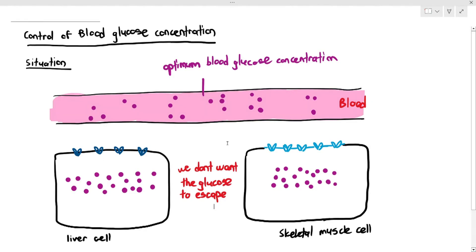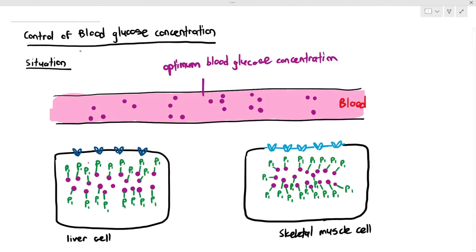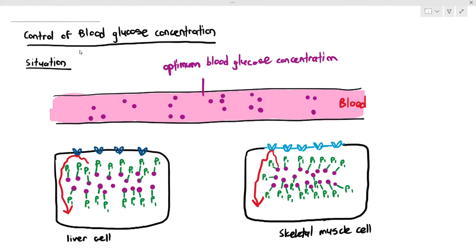One way the cell does this is by phosphorylating the glucose molecules — that is, by adding phosphate groups. By adding the phosphate groups, it will change the shape of the glucose molecules a little bit, so that they can no longer bind to the carrier proteins. And if they can no longer bind to the carrier proteins, they can no longer escape out of the cells — they are trapped within the cell. The carrier proteins are only specific to glucose, but not glucose phosphate.